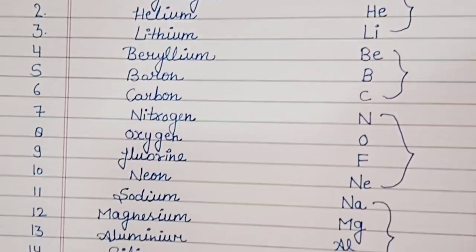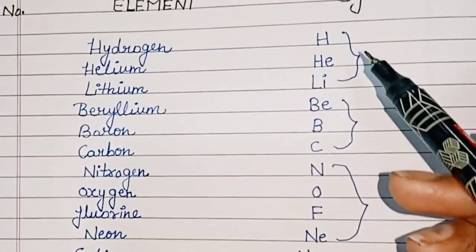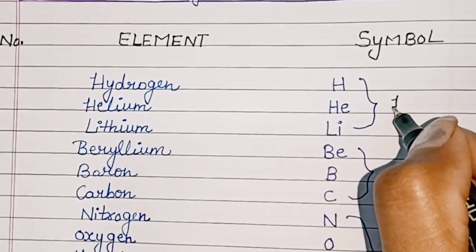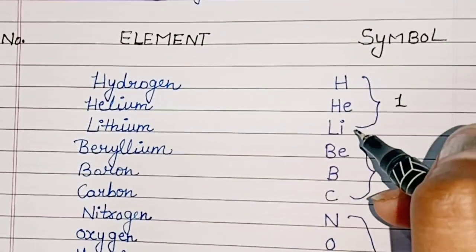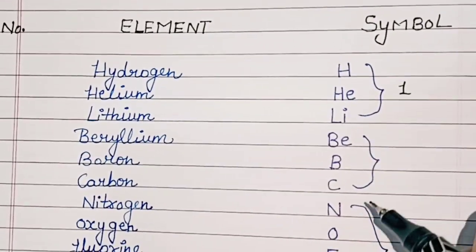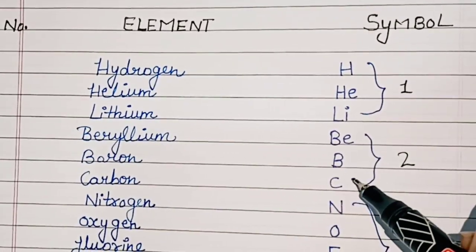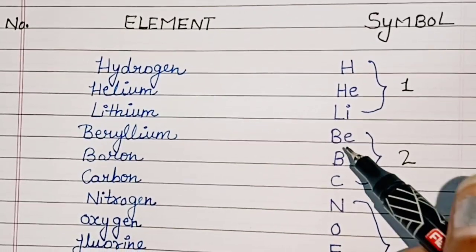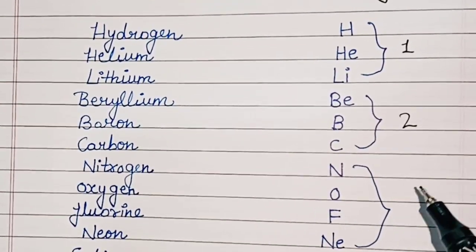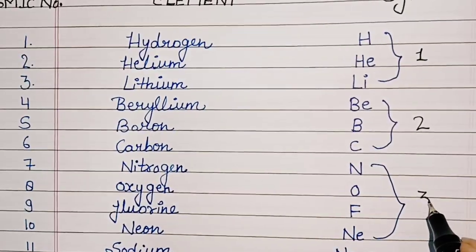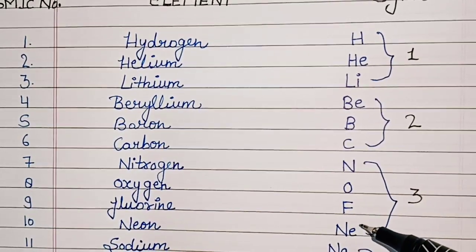The first slot is 'hi heli' — Hydrogen, Helium, Lithium. The second slot is 'bbc' — Beryllium, Boron, Carbon. The third slot is 'no funny' — Nitrogen, Oxygen, Fluorine, Neon.